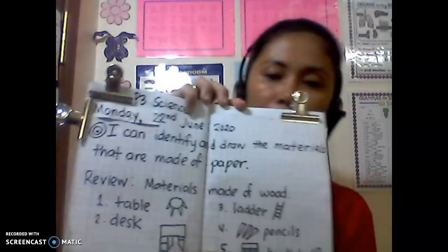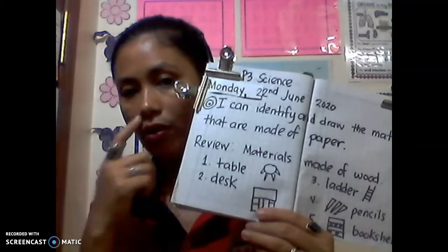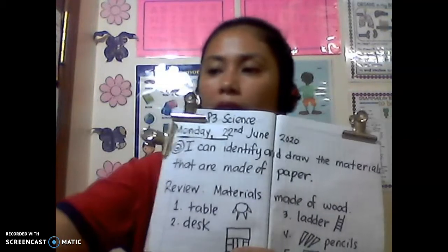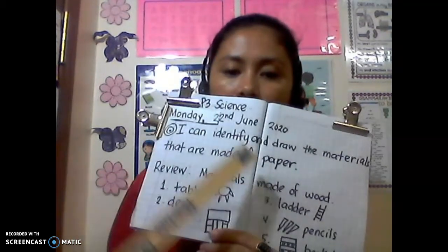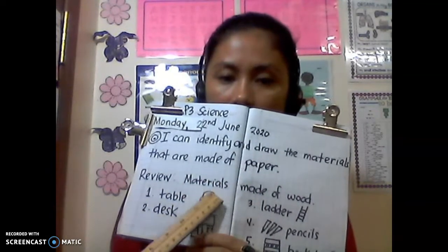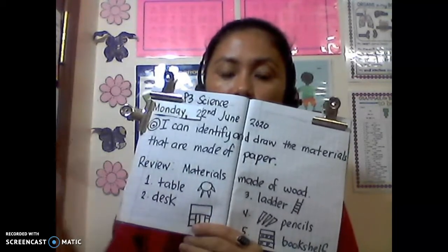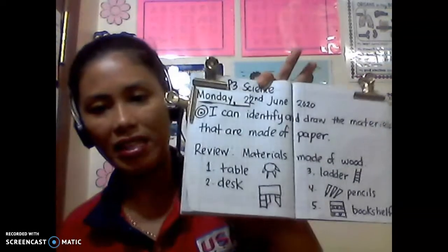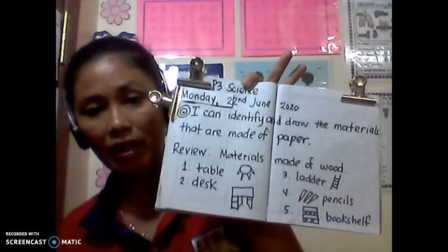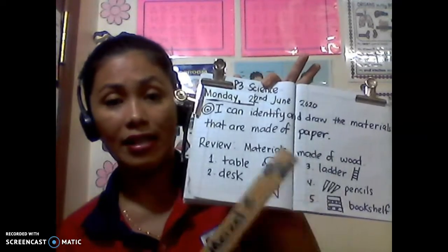Let's have a review about the things that we drew last time. We talked about this also on our meeting. Here are the things that are made of wood. So we have the table — the table in the picture was made of wood — and the desk. Also, look at my drawing. I encourage you to draw even if it's not perfect, but as long as it's nice and neat.